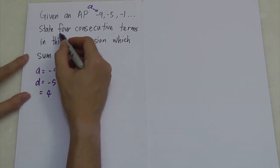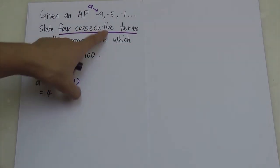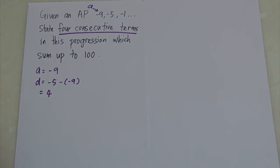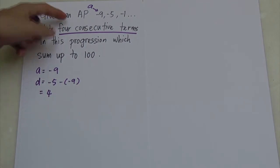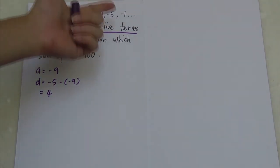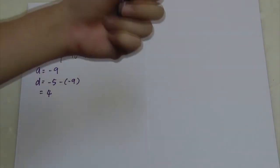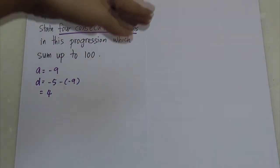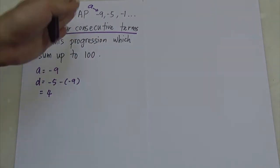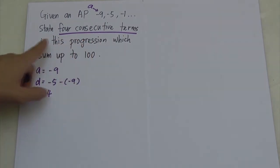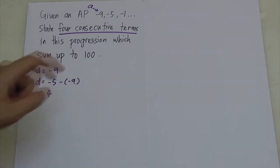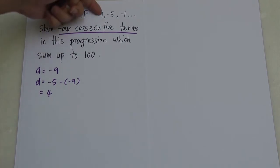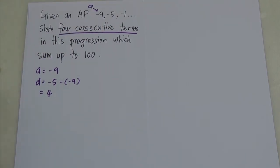The question asks you to state 4 consecutive terms. Consecutive means continuous — for example, if your terms start at the 4th term, it would be 4th, 5th, 6th, 7th — that's continuous. You cannot jump from the 2nd term to the 4th term; that is not consecutive. In this progression, 4 consecutive terms sum up to 100, so you need to find out which 4 consecutive terms sum to 100.